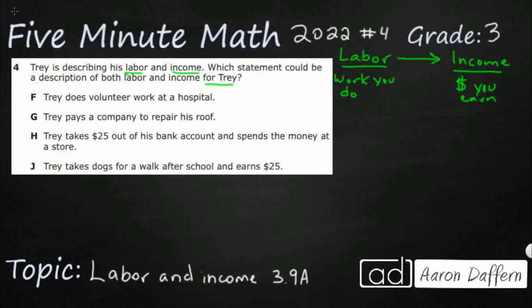So, it could be a chore around the house. You could take out the trash and you earn a dollar. You could mow your grandma's lawn and she gives you $20. That's all in that same area of labor and income. You do a little work, you get a little money.